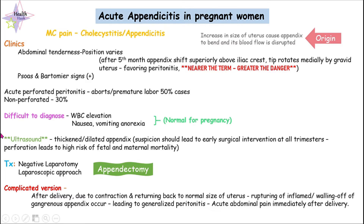Usually this condition — acute appendicitis in pregnant women — is very difficult to diagnose. There will be signs of elevated WBC, nausea, vomiting, and anorexia, but these signs are also commonly seen in a normal pregnancy. So we cannot diagnose this condition just by seeing blood test results or nausea, vomiting, and anorexia-like symptoms.